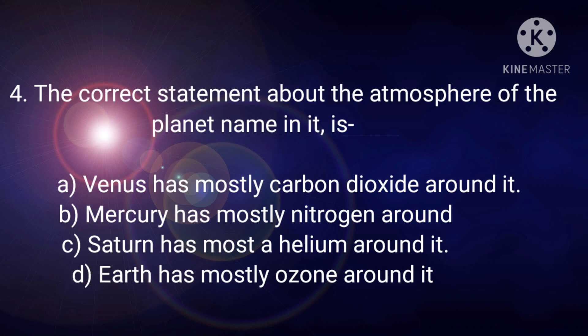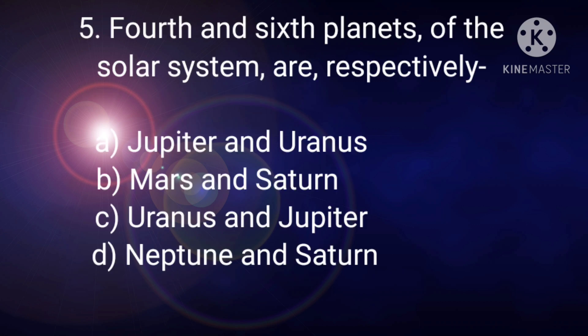Next statement is, the fourth and sixth planets of the solar system are, respectively, options are Jupiter and Uranus, Mars and Saturn, Uranus and Jupiter, Neptune and Saturn. Out of the given options, option B, Mars and Saturn is the correct option.